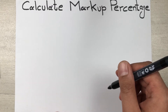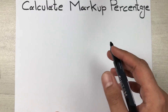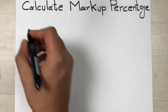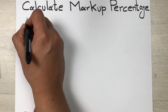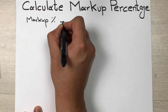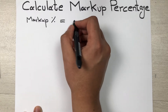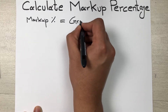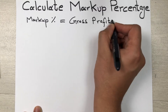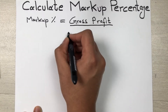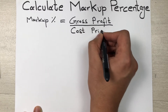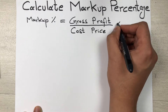Hello guys, I hope you are doing really well. In today's video I am going to show you how to calculate markup percentage. The formula to find out the markup percentage is: gross profit divided by cost price, multiplied by 100.